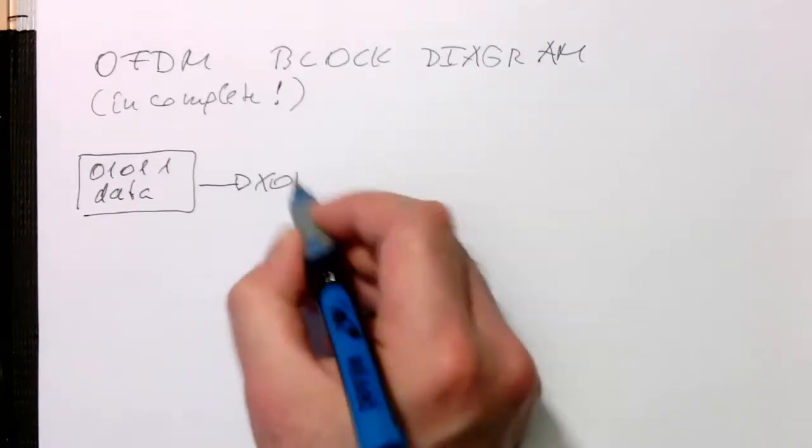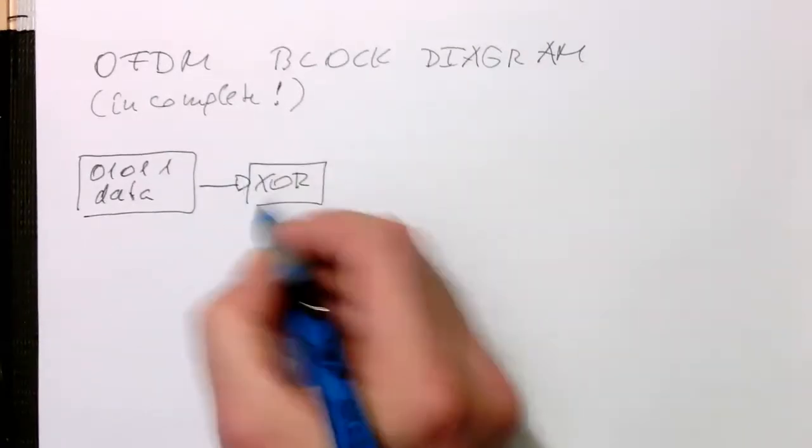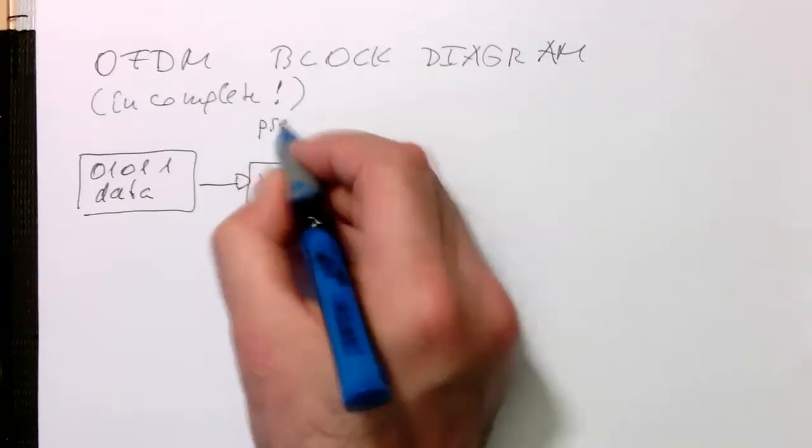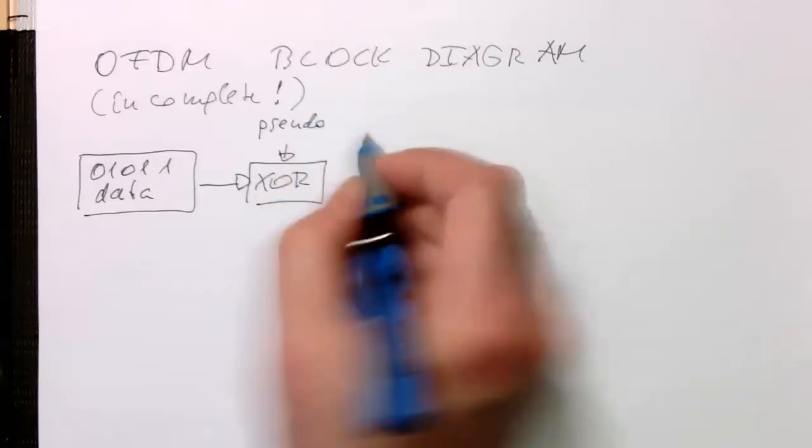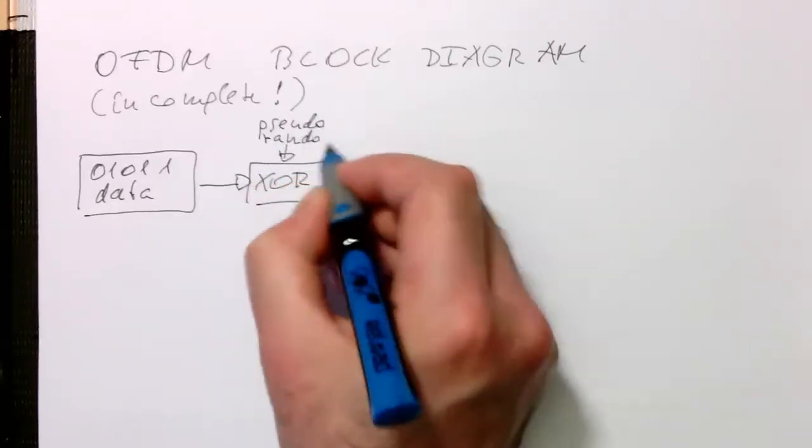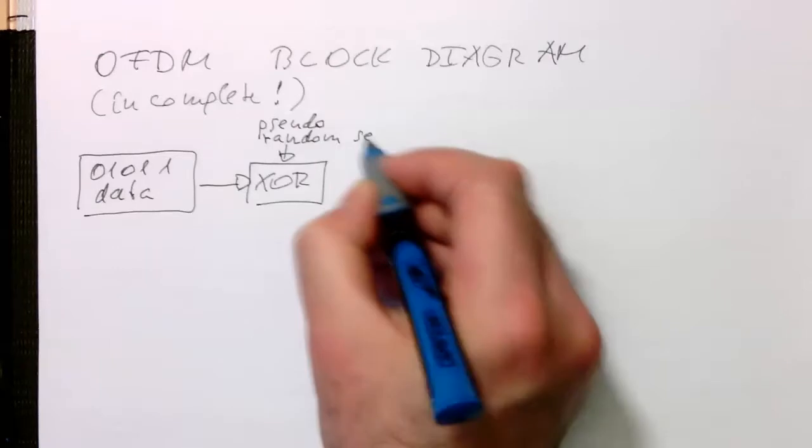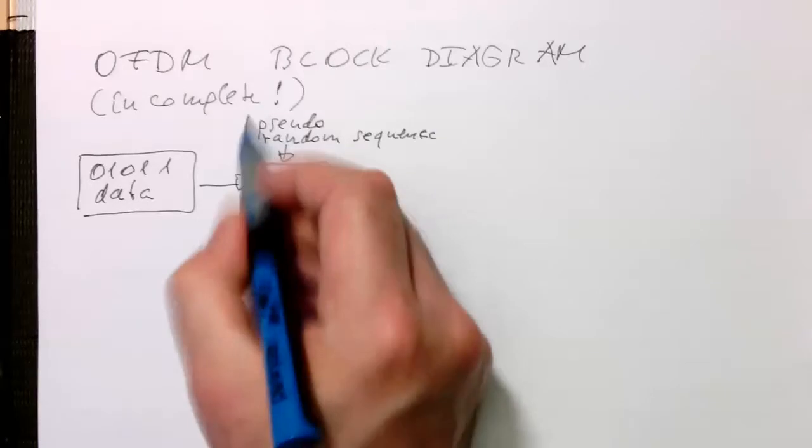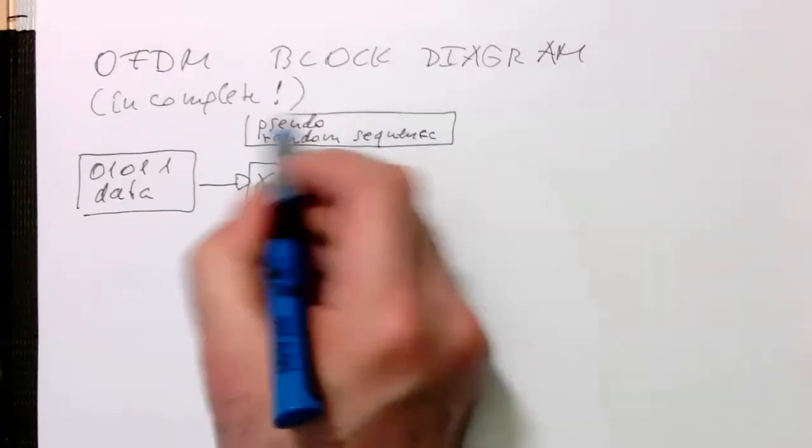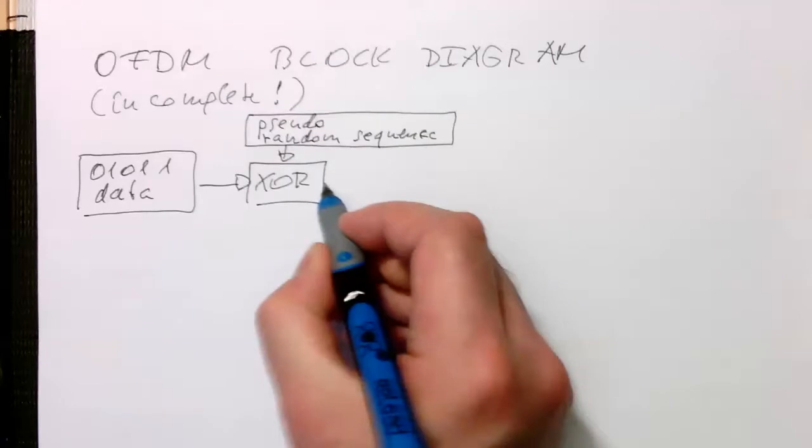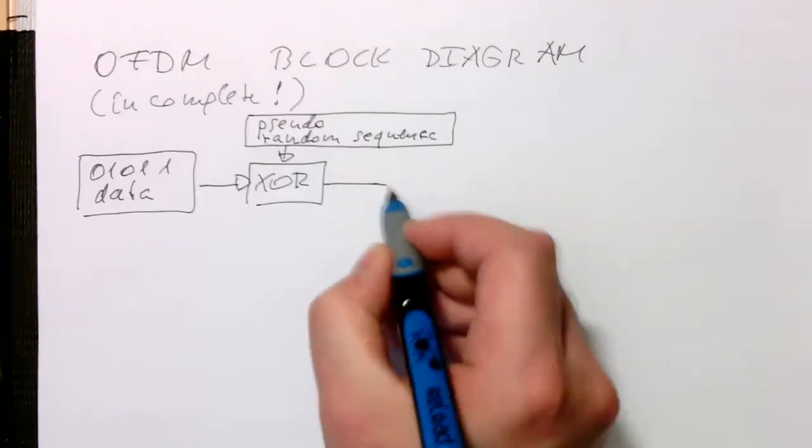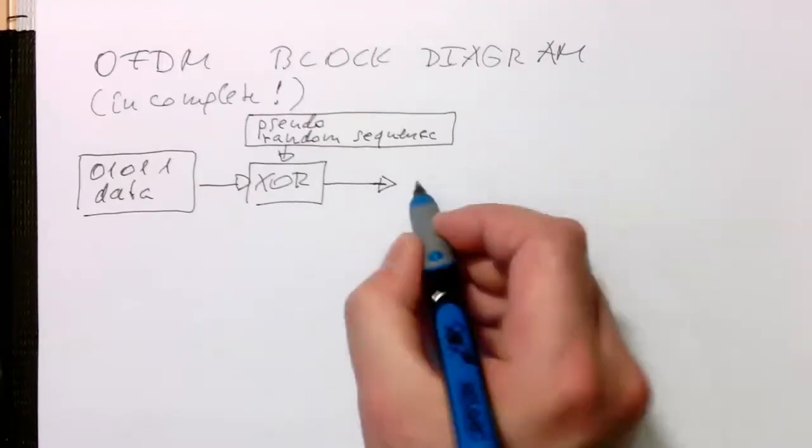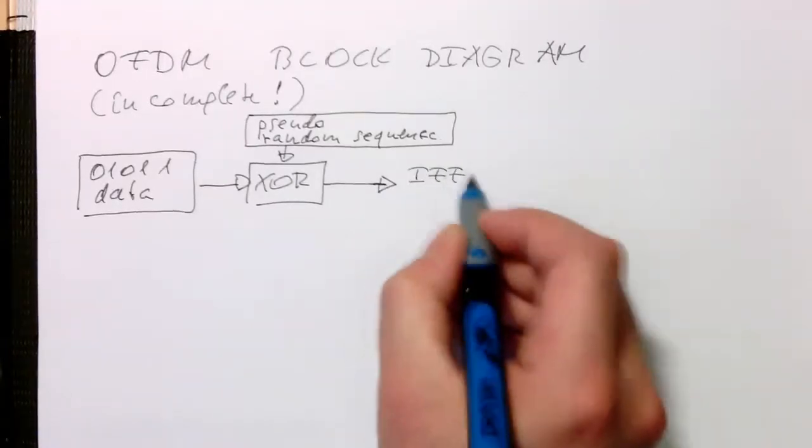An XOR gate and use a pseudo random sequence, so that we can guarantee that we are never getting just ones into our IFFT, or the chances are very very low. IFFT.